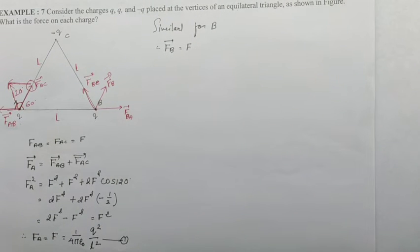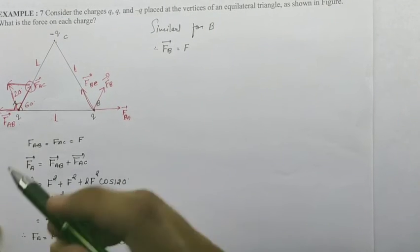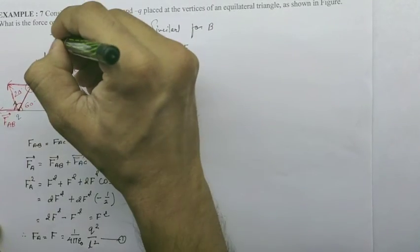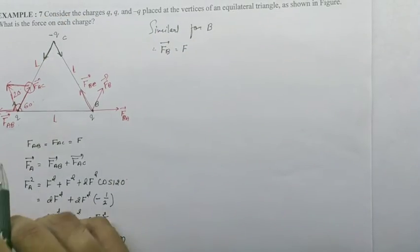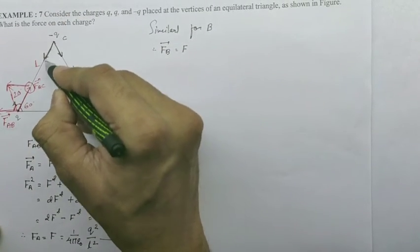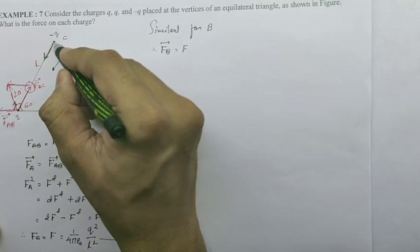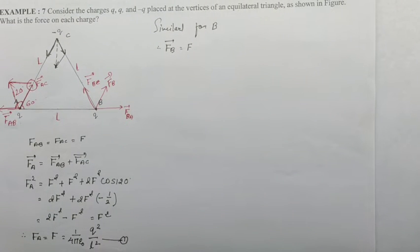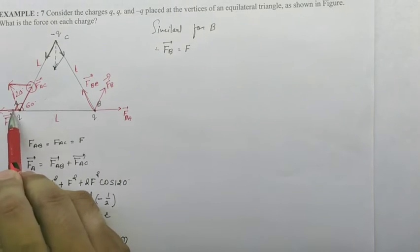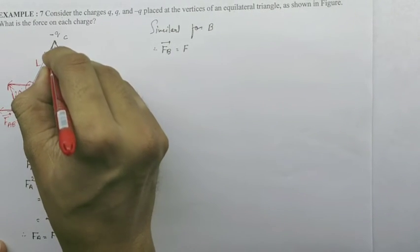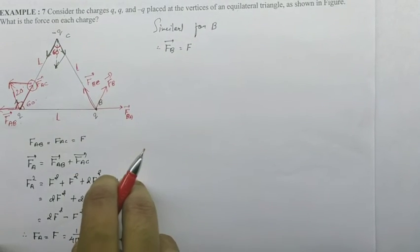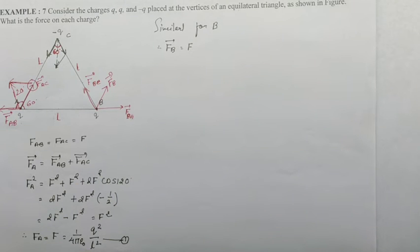But for C you need to understand carefully. Why? Because the angle changes there. Between A and C there is attraction rule. Between B and C there is attraction. If we combine head to tail, we will draw like this. And our force is in downward direction. But the angle between A and B was external. Here it is internal, which will be 60 degrees.